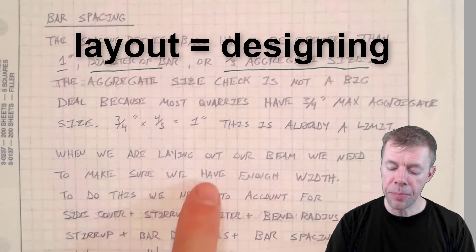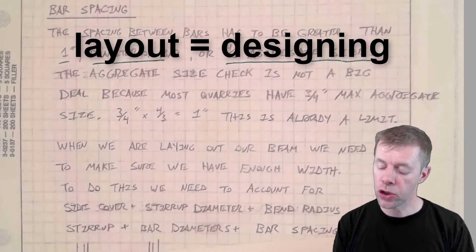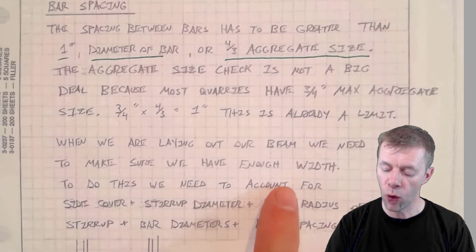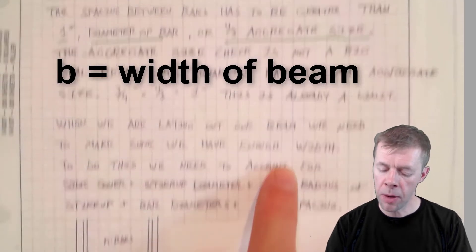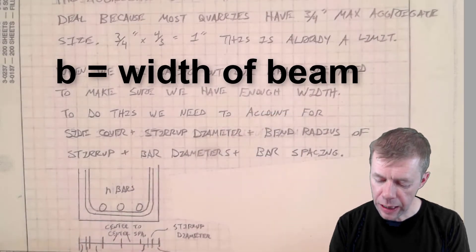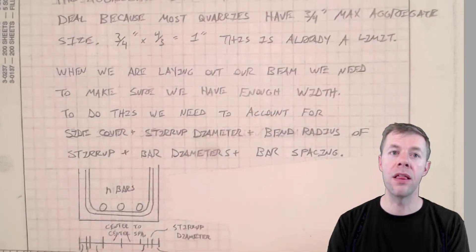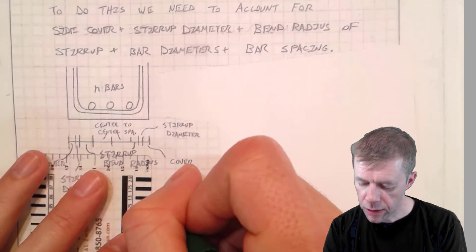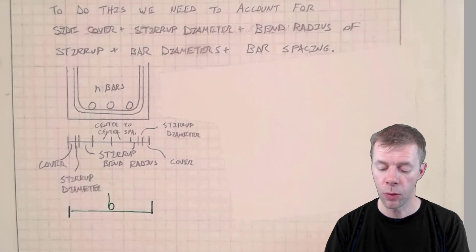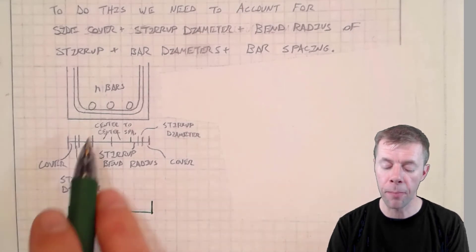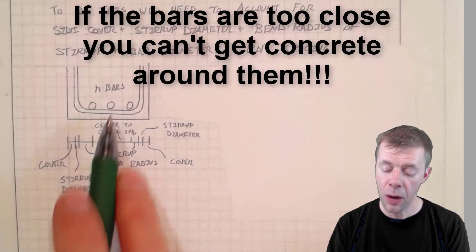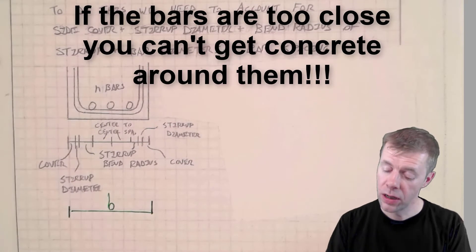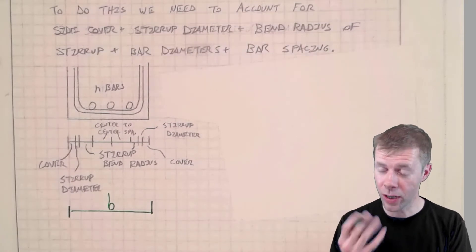So when we're laying out a beam, we need to make sure that we have enough width. What do I mean by that? Width. That is the B. That's like this dimension down here at the bottom. The B. We got to make sure we got enough B, we got enough width and we got to make sure we don't have our bars too close together. And we got to make sure everything fits. Doesn't sound sexy, but it's still kind of fun to do.